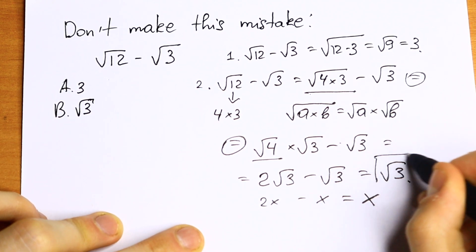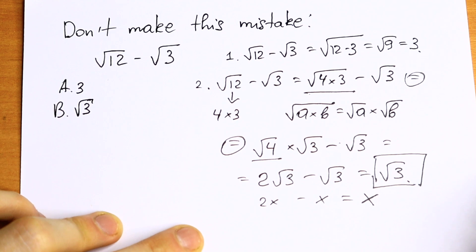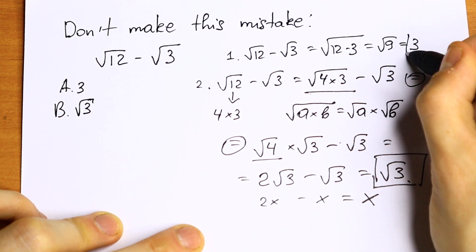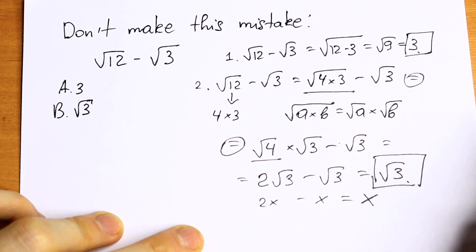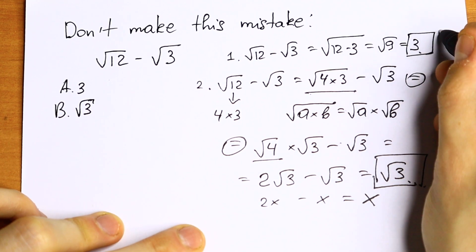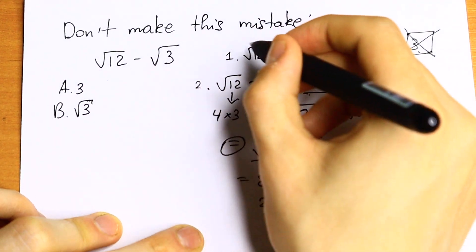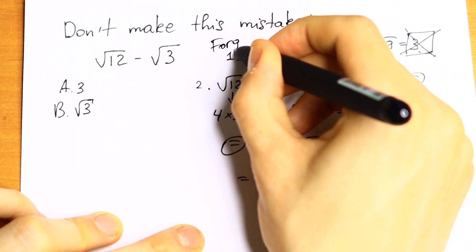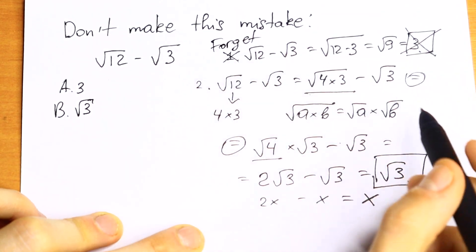We have two answers: the first one square root of 3 and the second one 3. This one will be correct, this one is not correct. Forget this answer, forget this way, it's not correct.